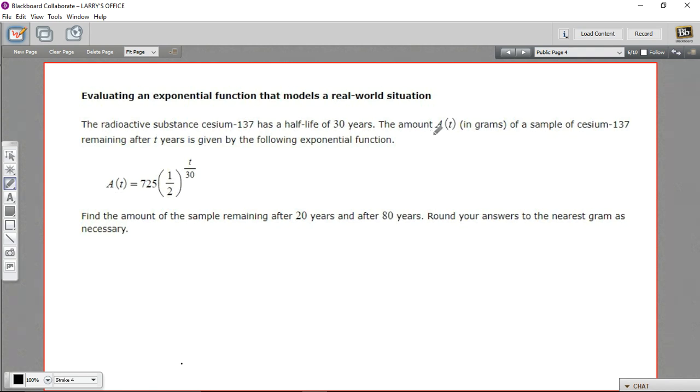The amount, A(t), in grams of a sample of cesium-137, remaining after t number of years, is given by the following exponential function. So they've got the amount equals 725 times one-half to the t over 30 power. This is the formula for half-life of a decaying radioactive substance.